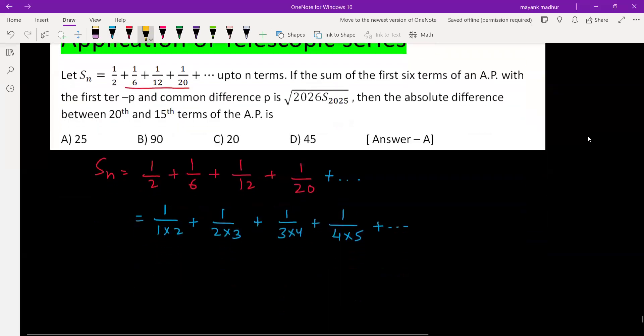Now we can write the first term as 1 minus 1/2, second term by writing this 1 as 3 minus 2, it is 1/2 minus 1/3, then 1/3 minus 1/4 plus 1/4 minus 1/5, which is a typical case of telescopic series.